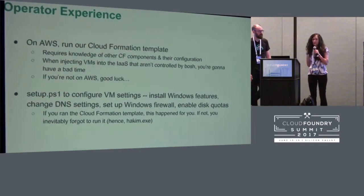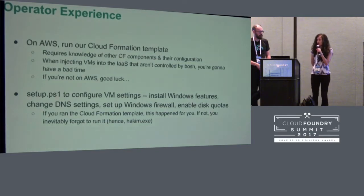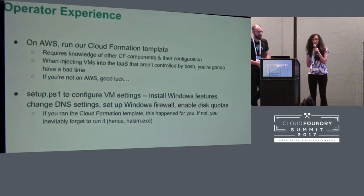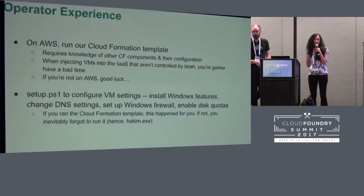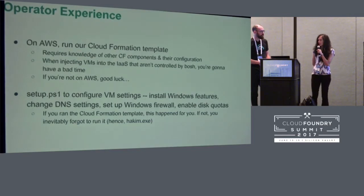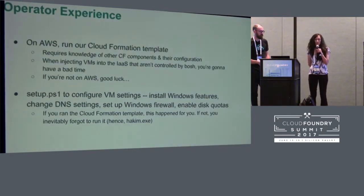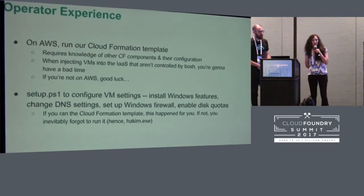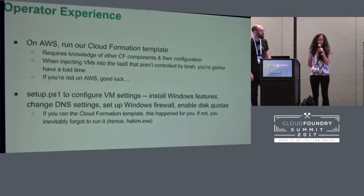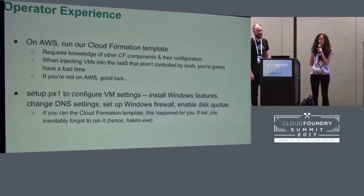Going into a little more detail on how we get the VMs up and running: on AWS you could specify a CloudFormation template and provide properties like the subnet and security groups. This automation was not available on other IaaSes like vSphere. We also needed a way to get the right configuration on the VMs — install Windows features, configure DNS settings — again, something that was automated a bit on AWS but was another possible point of failure on other platforms.